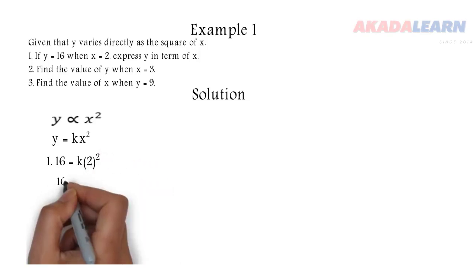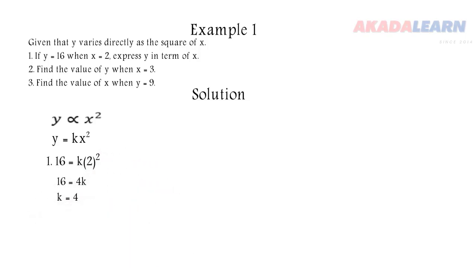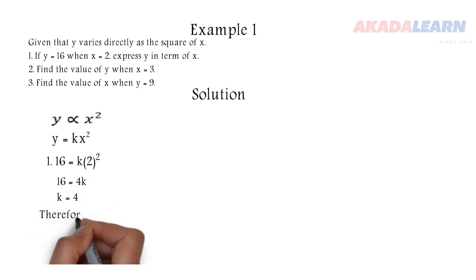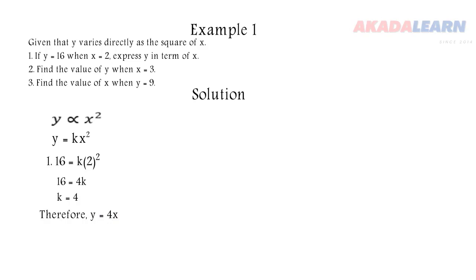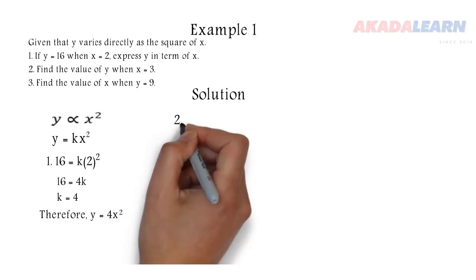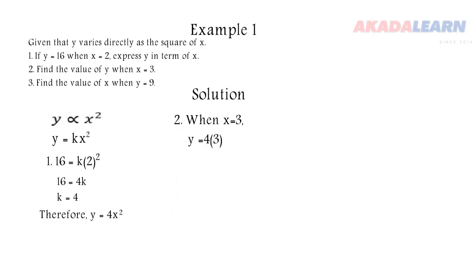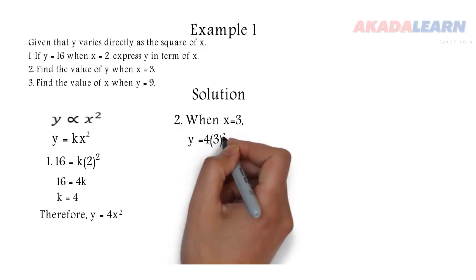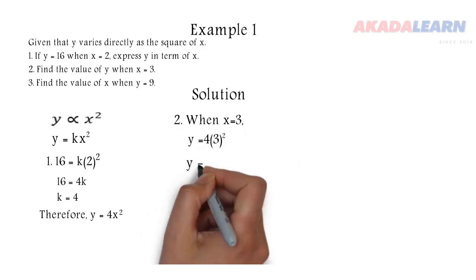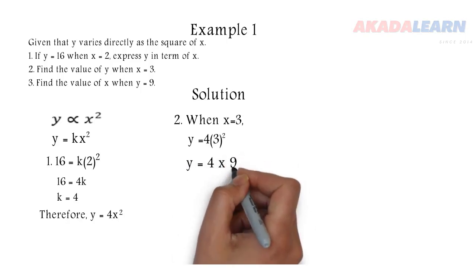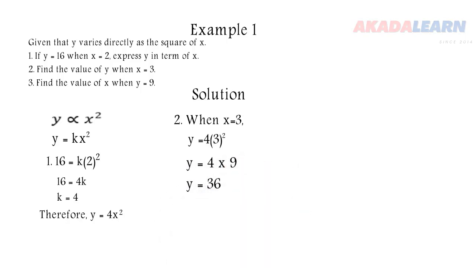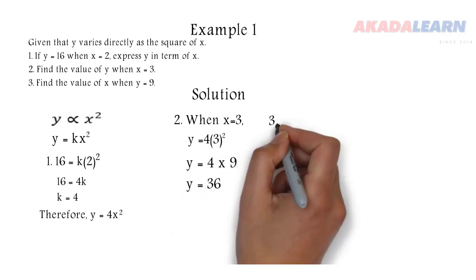When y is 16 and x is 2, we substitute in: 2 raised to power 2 is 4, so 4k equals 16, and dividing by 4 gives k equals 4. We rewrite the equation as y equals 4x squared. When x is 3, we substitute into this equation: y equals 4 times 3 squared, which is 4 times 9, giving y equals 36.